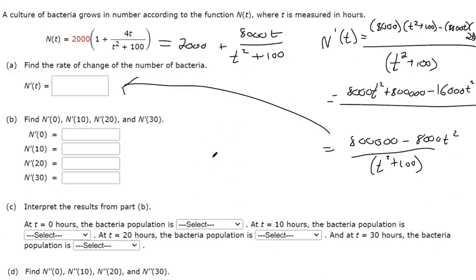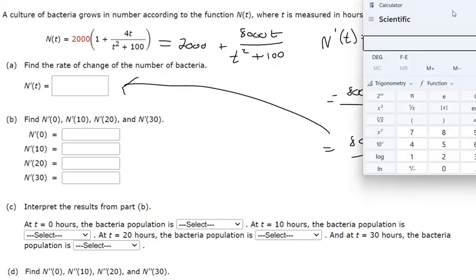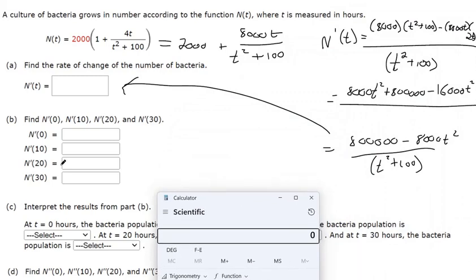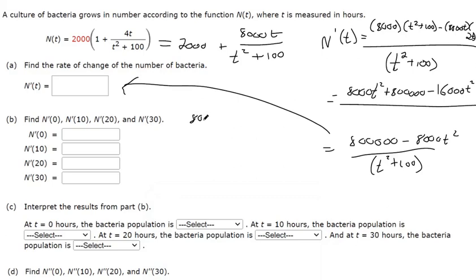Then they want us to plug in particular values. So they want us to plug in zero, plug in 10, plug in 20, plug in 30. So I'll do one of these, well maybe I'll do two. But it's pretty straightforward. You're just plugging in zero into the derivative. So if you plug zero in here, zero times 8000 is zero. So 800,000 minus zero is 800,000. And then zero squared is zero, zero plus 100 is 100. So you divide those two, you're going to get 8000.